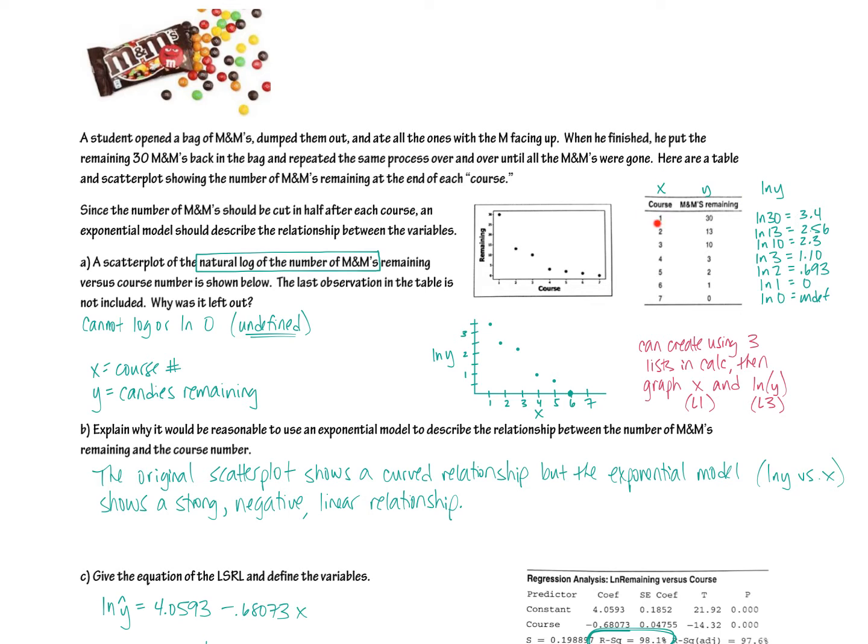Course, meaning the first time I dumped the M&Ms out there were 30 remaining. The second time I dumped them out there were 13 remaining. I'm no scientist, but I think this is like a half-life situation, kind of. It's not exactly half, but we're expecting it to be roughly half. That's why we've got this exponential decay type of curve here. So that's not linear, so I can't do my linear stuff with it.